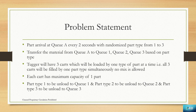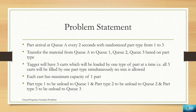You may have seen the Tugger running in the demo earlier — it was carrying colorful parts: blue parts are part type 1, orange parts are part type 2, and red parts are part type 3. The Tugger will have three cards, loaded by one type of part at a time. All three cards will be filled by one part type simultaneously and no mix is allowed. In a single run, the Tugger transfers one color type — first blue, then orange, then red.